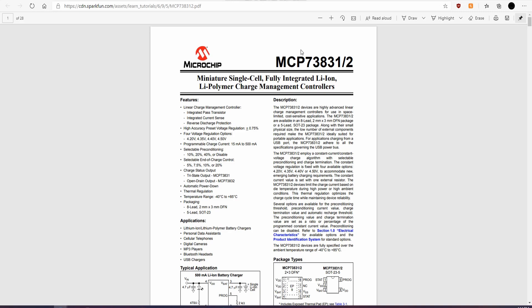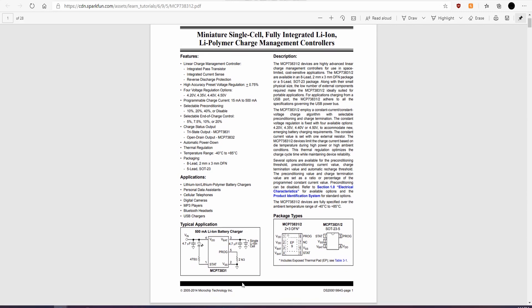To charge the 18650 cells, I decided to use the MCP73831 IC. I have a few of these on hand, so I figured I'd use them instead of ordering more TP4056 ICs. That and it requires fewer components than the TP4056, which means that we'll have a smaller footprint, which is nice.